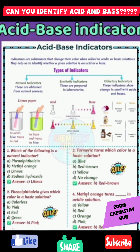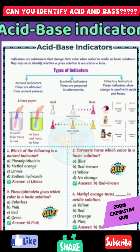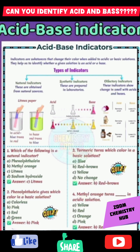We have a short quiz. First: which of the following is a natural indicator? The answer is litmus indicator. Second: phenolphthalein gives which color in a basic solution? The answer is pink color.